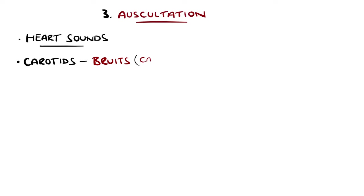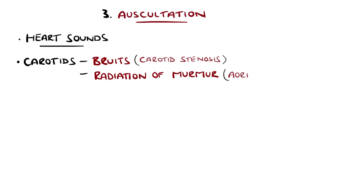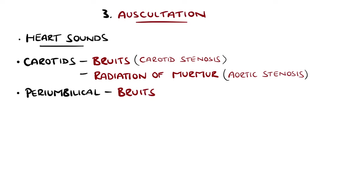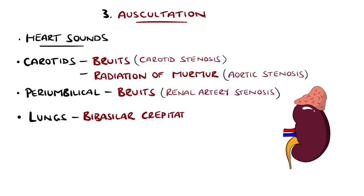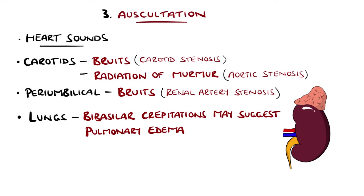Additional areas of auscultation include the carotids for evidence of bruits that could indicate stenosis, or radiation of a systolic murmur that may indicate aortic stenosis. The peri-umbilical region may reveal a murmur from renal artery stenosis, which is a potential cause for secondary hypertension. Auscultate the lungs, in particular looking for the presence of bilateral fine basal crackles that can indicate pulmonary oedema, and wheezing is another finding that may be heard in severe cases.